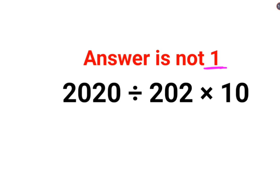Because a lot of people thought that 202 multiplied by 10 should be 2020 divided by 2020 and then the answer should be 1. Now that my dear friends is absolutely incorrect.